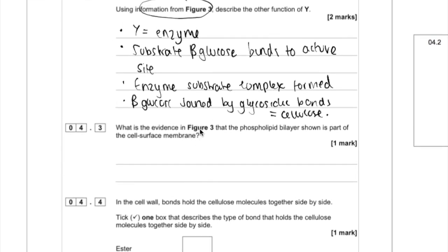Another one requiring to use figure three, what's the evidence? So what can we see in figure three? That the phospholipid bilayer shown is part of the cell surface membrane. So if it's not part of the cell surface membrane, what other membrane could it be part of?